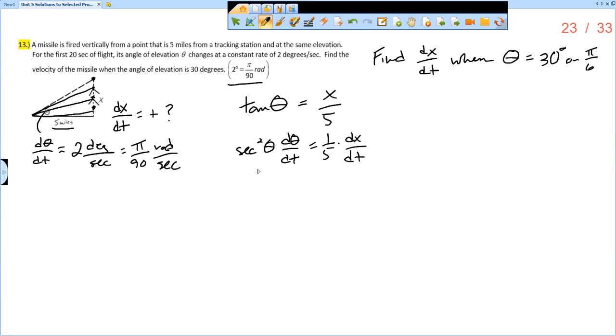And so now, we plug in the known quantities. So we know that theta is 30 degrees or pi over 6. So secant squared of 30 degrees times d theta dt, which is pi over 90, equals one fifth dx dt, which is what we want to know.